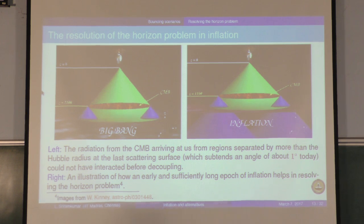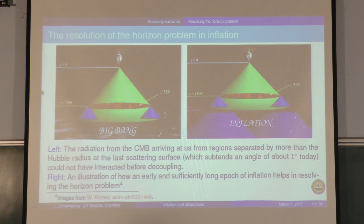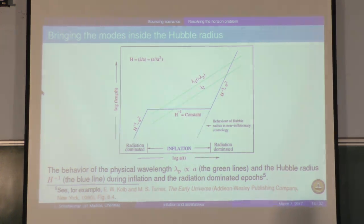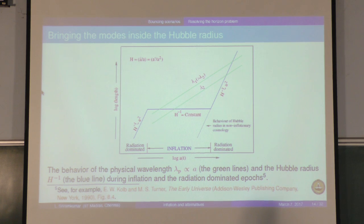This is essentially what bouncing models also do. It allows eta to be negative so that you can start at a sufficiently early epoch so that your forward light cone is as big as the backward light cone at the epoch of decoupling. You have plotted logarithm of length versus the e-folds, and there are two scales here: the wavelengths, which are proportional to the scale factor, and the Hubble scale during inflation. You can bring modes of cosmological interest well inside the Hubble scale if you have a sufficiently long epoch of inflation.